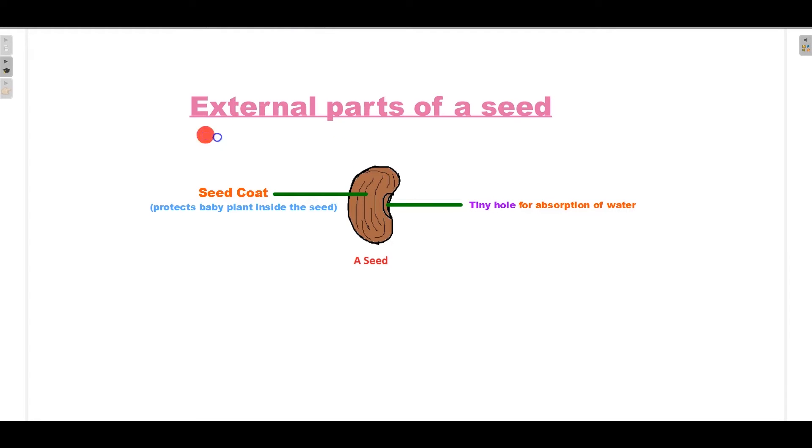External parts of a seed. This is the external view of a seed. The seed is completely covered with a seed coat-like structure. This seed coat protects the baby plant inside the seed.